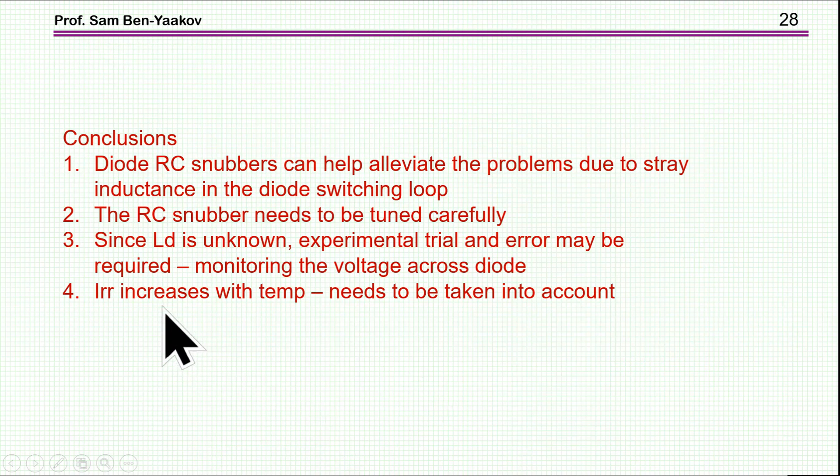So what are the conclusions here? We see that a diode RC snubber can really help alleviate problem due to the stray inductance in the diode switching loop. The RC snubber needs to be tuned carefully. Since LD is unknown, experimental trial and error may be required, and during this experiment, you can monitor the voltage across the diode itself by a differential probe. And then, one has to take into account the reverse recovery of a diode, of a silicon diode, is highly temperature-dependent, and at high temperature, it is becoming larger. So one has to take this into account when designing the RC snubber.